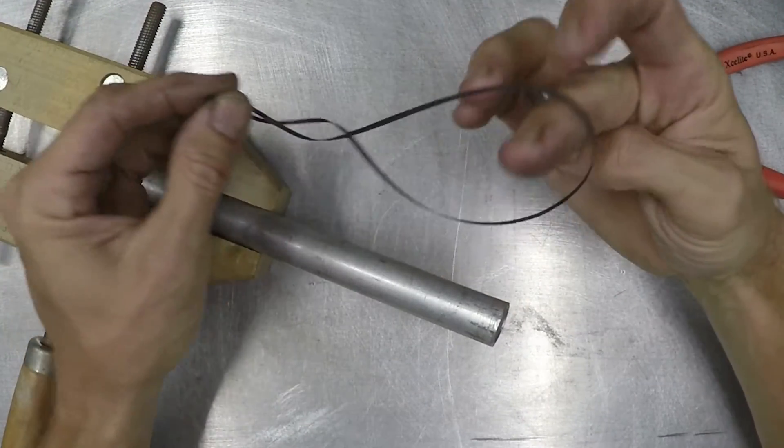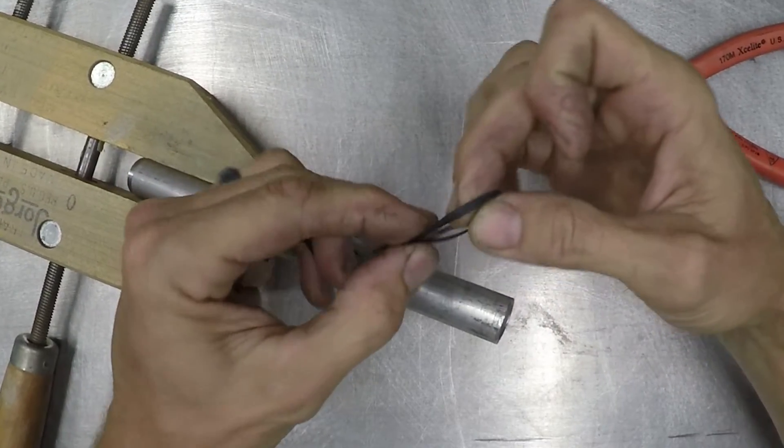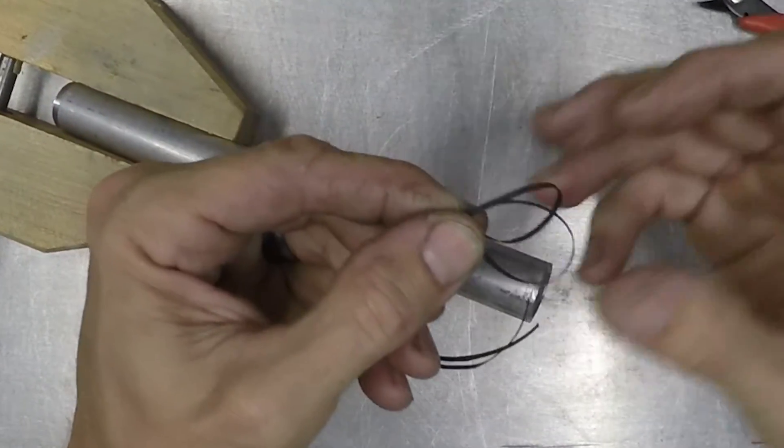Take the ends, put them together, put your two fingers, and flip it over like that. You can see what that makes. It's a quick loop.